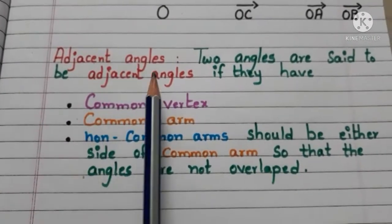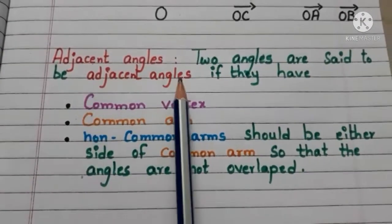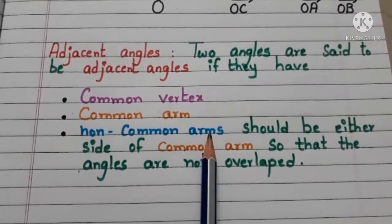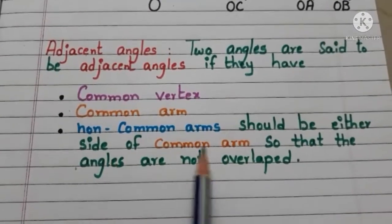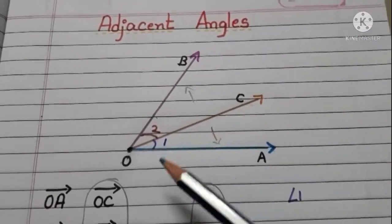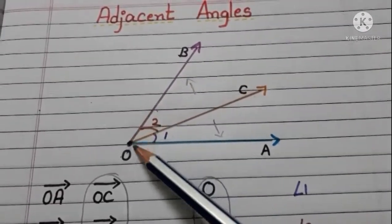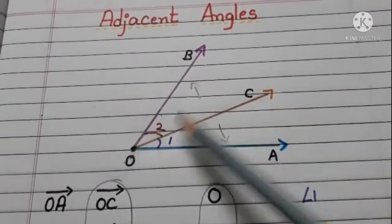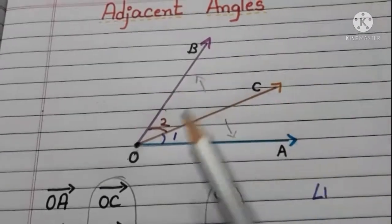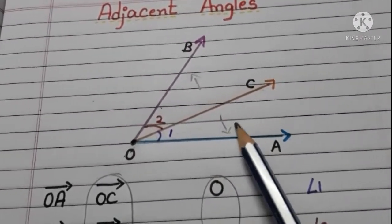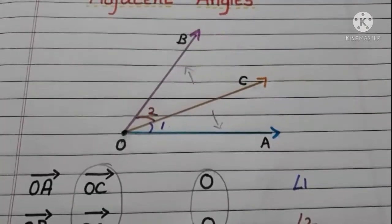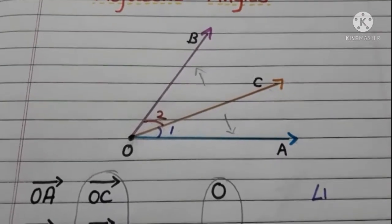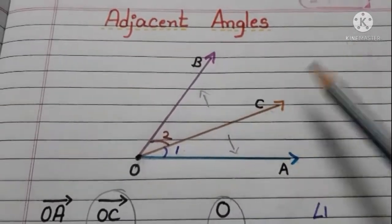Let us see the definition of adjacent angles. Two angles are said to be adjacent angles if they have a common vertex, a common arm, and the non-common arms should be on either side of the common arm so that the angles are not overlapped. In this figure, OC is the common arm and OB, OA are non-common arms. The non-common arm OB is in one direction from the common arm OC, and the non-common arm OA is in the other direction. They should be in different directions — then only the angles will not be overlapped. So, angle 1 and angle 2 are said to be adjacent angles.